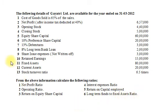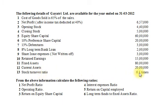Dear students, let us understand the question first. Cost of goods sold is 65% of sales, but sales information is not directly available. Net profit after tax is given as Rs. 6,57,000. Opening and closing stock are available, so we can calculate average stock. Using the stock turnover ratio and average stock, we will calculate cost of goods sold, then total sales, and then gross profit.